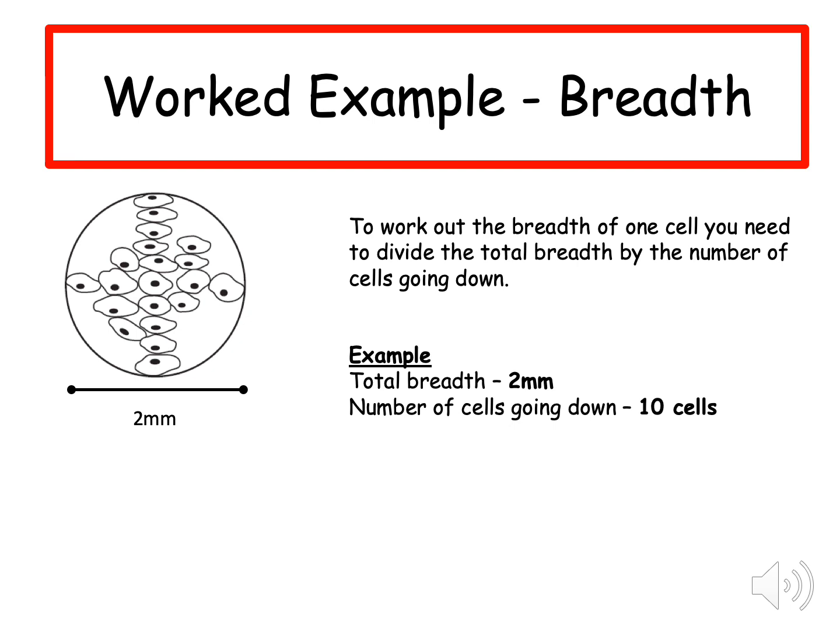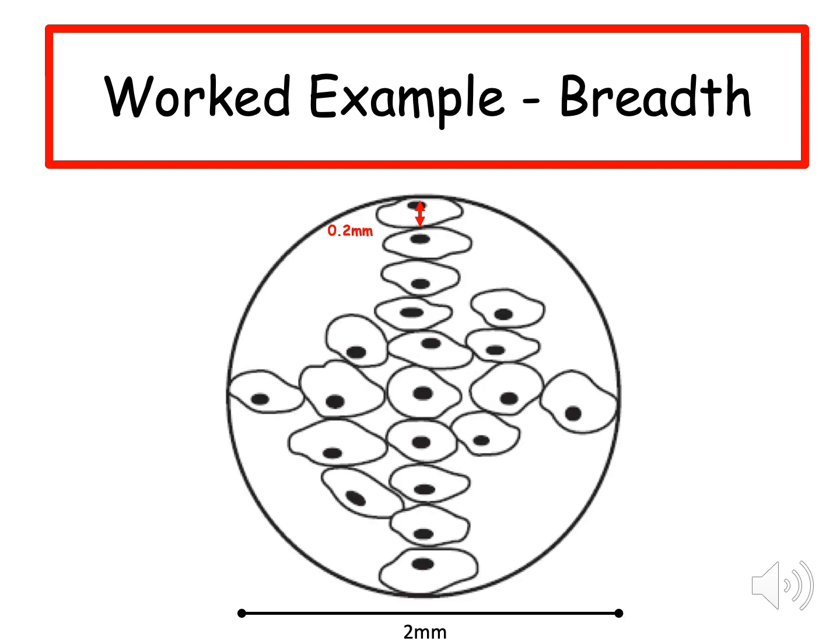If we are working out the breadth of one cell, you need to know the total breadth, which is the same as the length as it is a circle we're working with, and the number of cells that are going down. In this example, the total breadth is two millimeters and the number of cells that are going down is 10 cells. You then divide the total breadth by the number of cells going down. So two millimeters is divided by 10 cells and this gives you 0.2 millimeters, which is the breadth of one cell. So each cell has 0.2 millimeters in breadth. This means that any cell in this sample has a breadth of 0.2 millimeters.